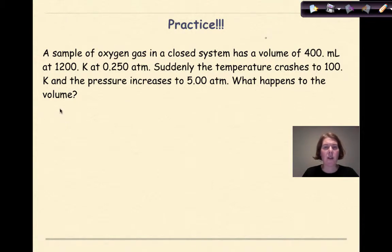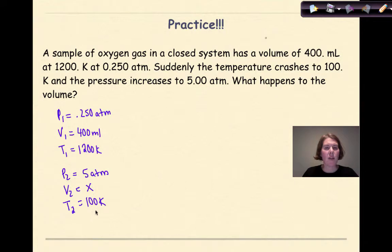So let's start out by listing out our variables. So P1, V1, T1, P2, V2, and then T2. A sample of oxygen gas in a closed system has a volume of 400 milliliters. Well, there's my V1. 400 milliliters at 1200 K. So my temperature is 1200 K at 0.250 atm. Suddenly the temperature crashes to 100 K. So my T2, wow, that's a big drop in temperature. The pressure increases to 5 atm. So my P2 is going to now be 5 atm. What happens to the volume? So V2 is my X. So now that I have everything listed out...